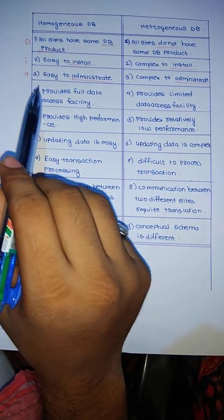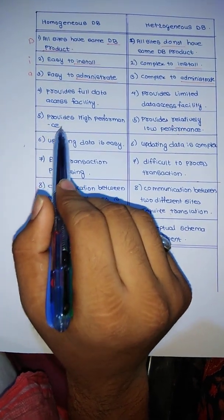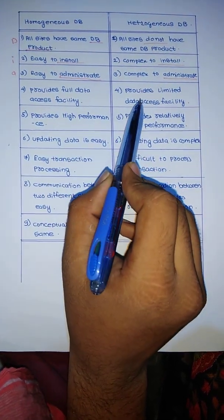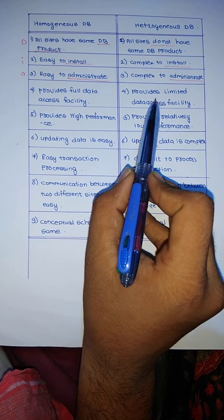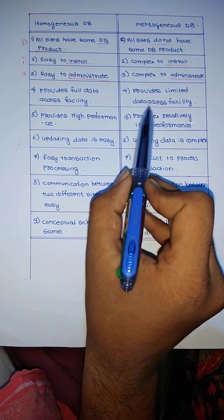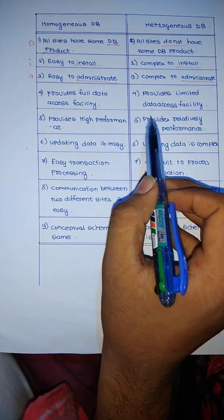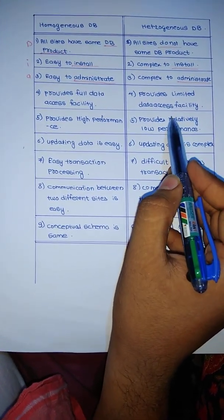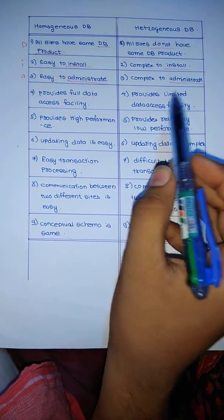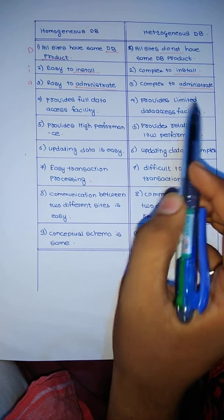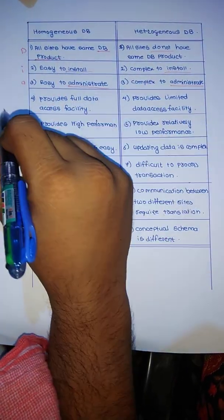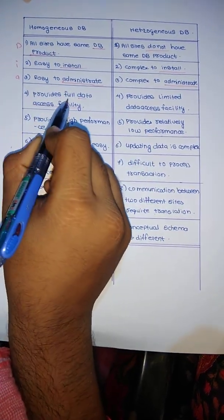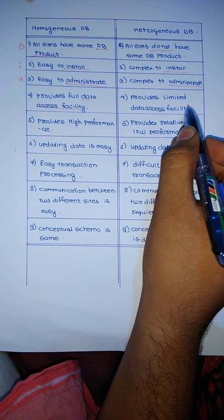What does this mean? In a homogeneous database, we have synchronized data at a single place, so accessing data is quite easy. But in a heterogeneous database, we have different types of databases and it requires some time to synchronize between each database. Suppose I have updated some data in database one and my friend is accessing that data from another database, but it is not yet synchronized — so he will not get true data. So the keyword is data access facility — full in homogeneous, limited in heterogeneous. That is D.